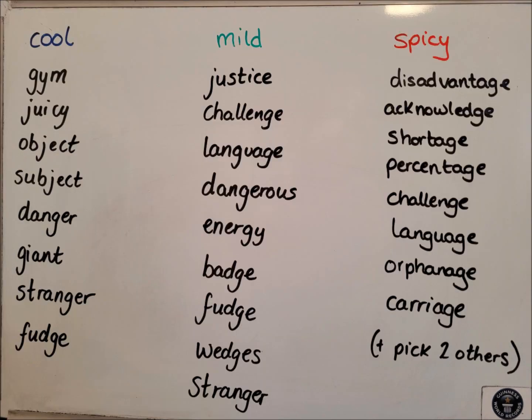Word lists for this week. You can choose if you tackle cool, mild or spicy. For cool, we've got: gym, juicy, object, subject, danger, giant, stranger and fudge. For mild, we have: justice, challenge, language, dangerous, energy, badge, fudge, wedgies and stranger.